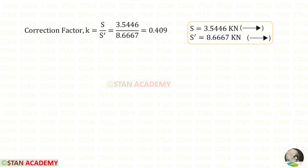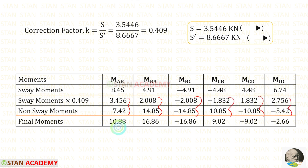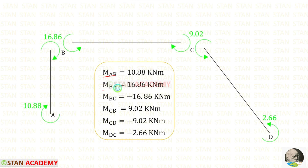Now let us find the correction factor K using the formula S / S dash. We have found S = 3.5446 kN and S dash = 8.667 kN. Finally, the correction factor K = 0.409. We make a table entering all sway moments, multiply them by K, then add the non-sway moments to get the real final moments. For M_AB, M_BA, and M_CB we get positive values, meaning they act clockwise. For M_BC, M_CD, and M_DC we get negative values, meaning they act anticlockwise.